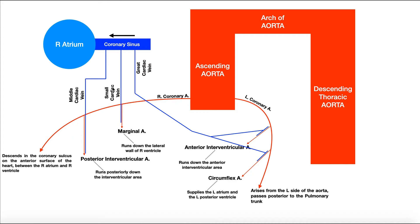The small cardiac vein is mostly on the anterior side of the heart, on the far right side. Being small, it's going to drain blood from a small artery. The smallest artery we saw was the right marginal artery — remember, it's easy to miss that one if you're glancing over the heart quickly. So the small cardiac vein drains blood from the right marginal artery.